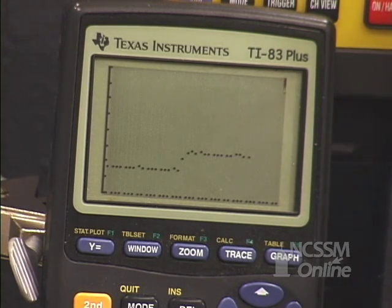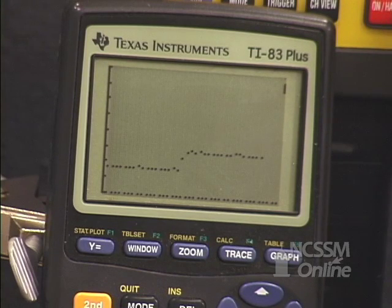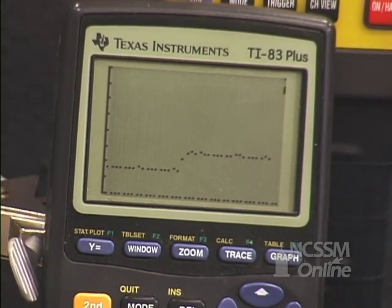Eventually, an equilibrium is reached between the methanol liquid and the methanol vapor and the pressure will level off. The difference between the initial pressure and the final pressure gives the vapor pressure of the liquid methanol at this temperature.